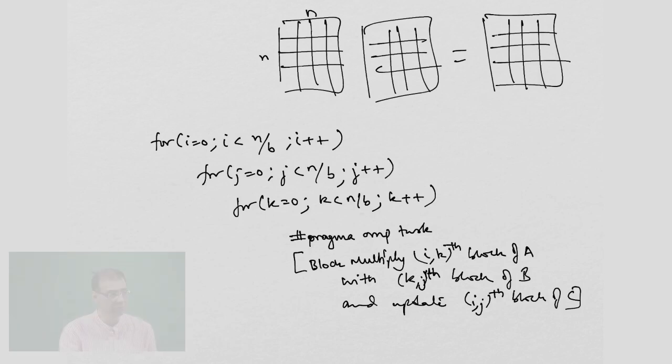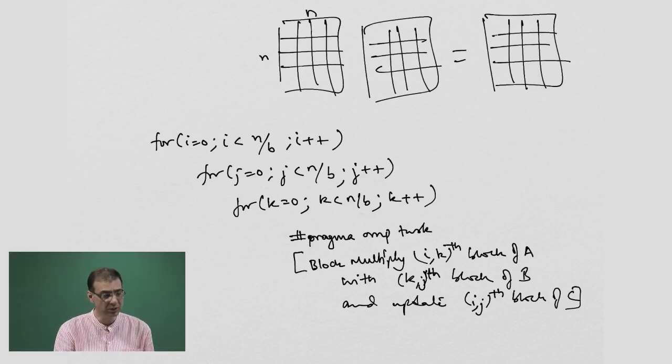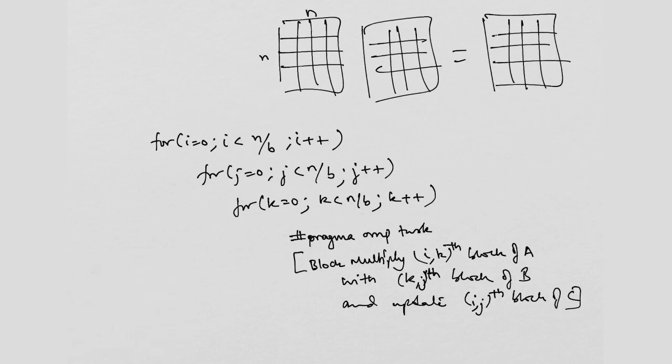I am creating tasks out of every pair of blocks in A and B, not for every C block. So, the same C block will get updated by multiple tasks. Is that point clear? Because I am creating a task for each i k k j.